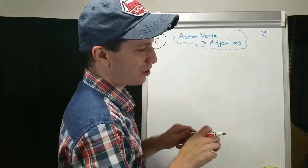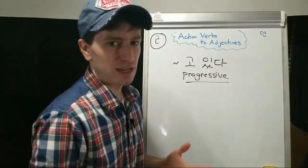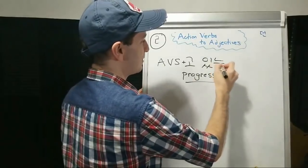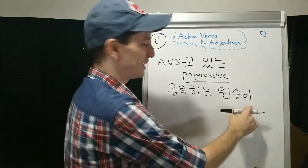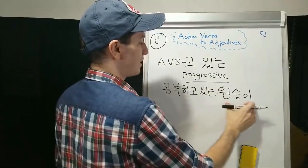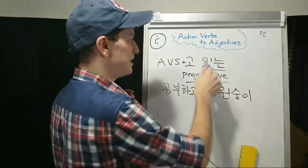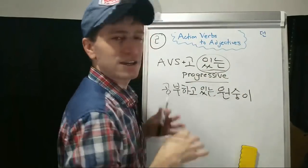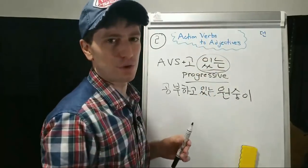Now let's do progressive tense: 고 있다. It's something you're currently doing — just the action verb stem plus 고 있다. It becomes 있는 for present tense. So you can say 공부하는 원숭이 — a monkey who is studying, or a monkey who studies. Or you can say 공부하고 있는 원숭이 — a monkey who currently right now is studying. Note that 있다 is more of a descriptive verb than an action verb — you only need to learn it becomes 있는 with this form in the present tense.